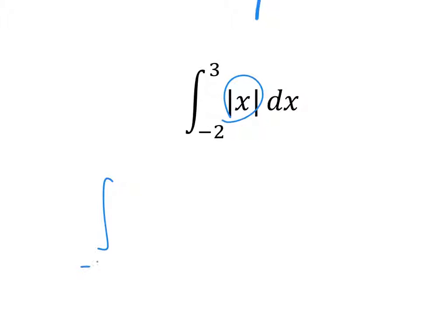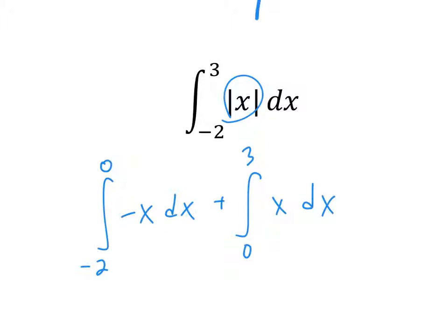This is going to be from negative two to zero — we're going to use the left-hand side function, which says it's negative x. Plus, from zero to three, we're going to use the positive function, which says it's x. You've never really calculated this way — what I always told you was just put absolute value bars around it and calculate. But essentially, that's what you're doing: you're changing it to the opposite sign.